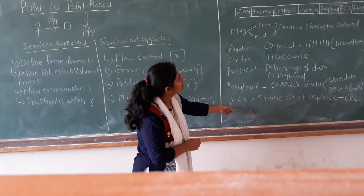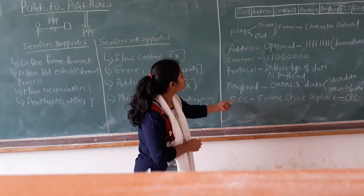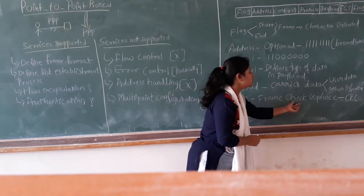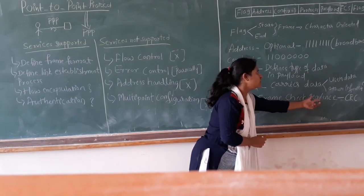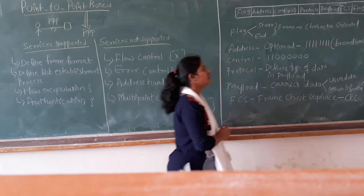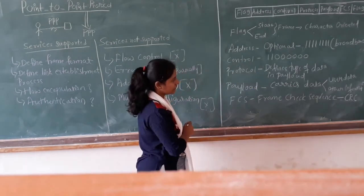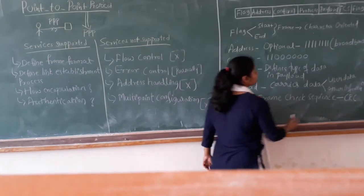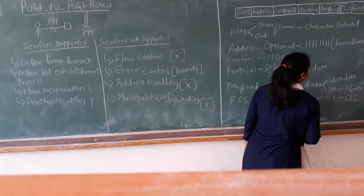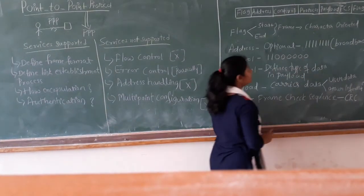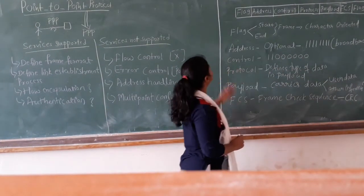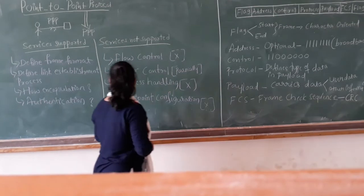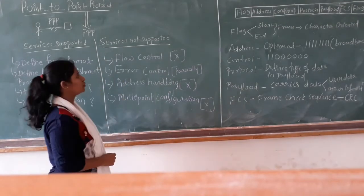Then we have FCS, which stands for Frame Check Sequence, which is nothing but the CRC technique. CRC technique is used for error detection and error correction. This is all about the frame format of PPP protocol.